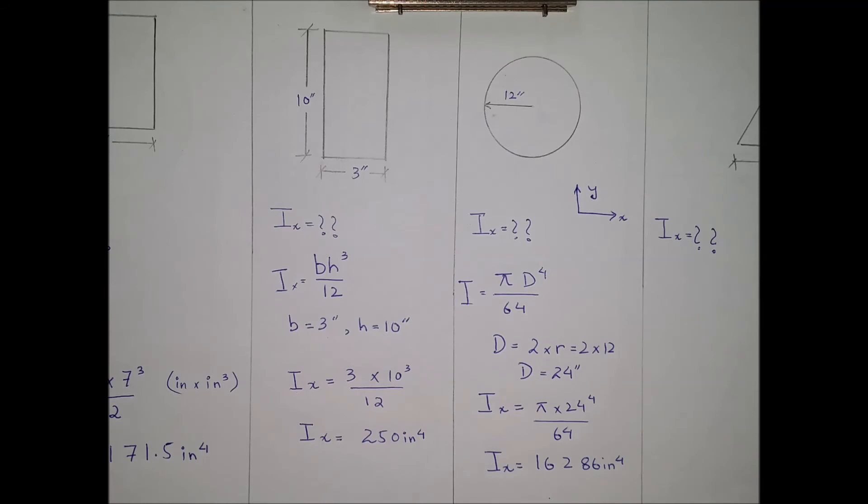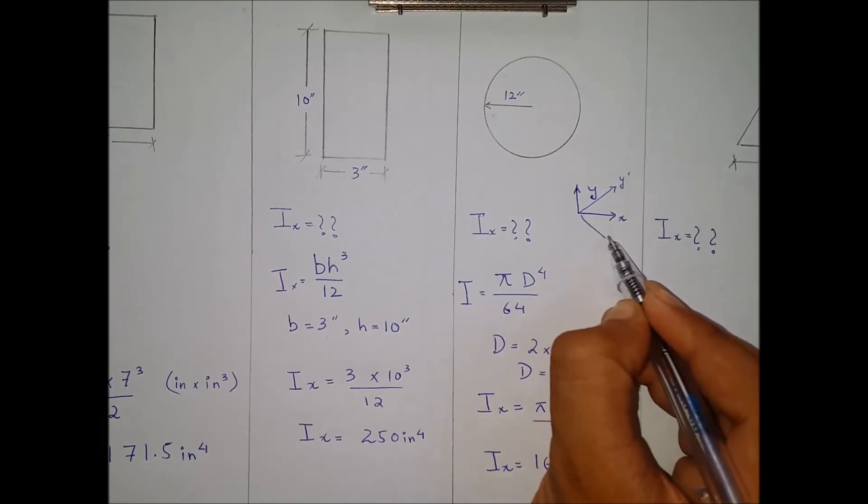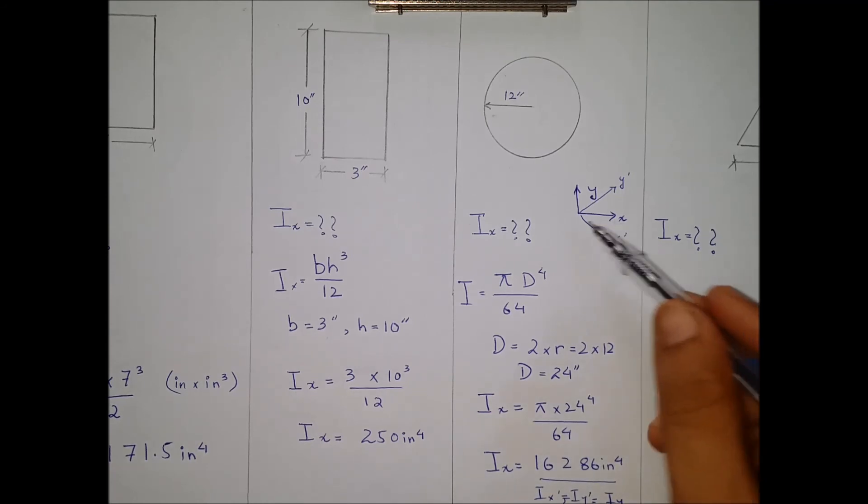The moment of inertia for a circle will always be the same in the y-axis and x-axis, or if there was any other axis y-prime or x-prime. So this value will be for Ix-prime, Iy-prime, or Iy simply, since the axes were on the same plane.